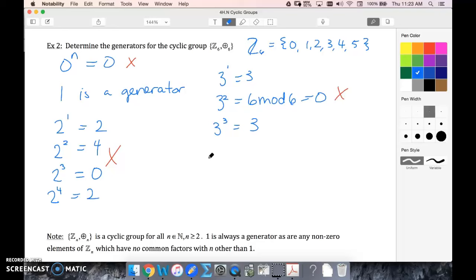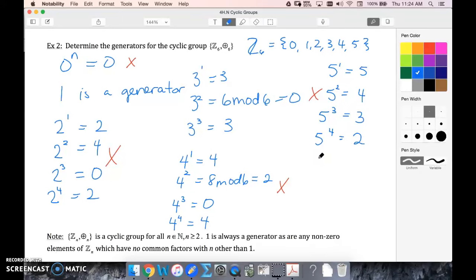Add five, I get eight. Eight mod six is two. That's going to give me one. Now I add five again, I get six mod six, which is zero. I've covered all of my elements. Therefore, five is also a generator.